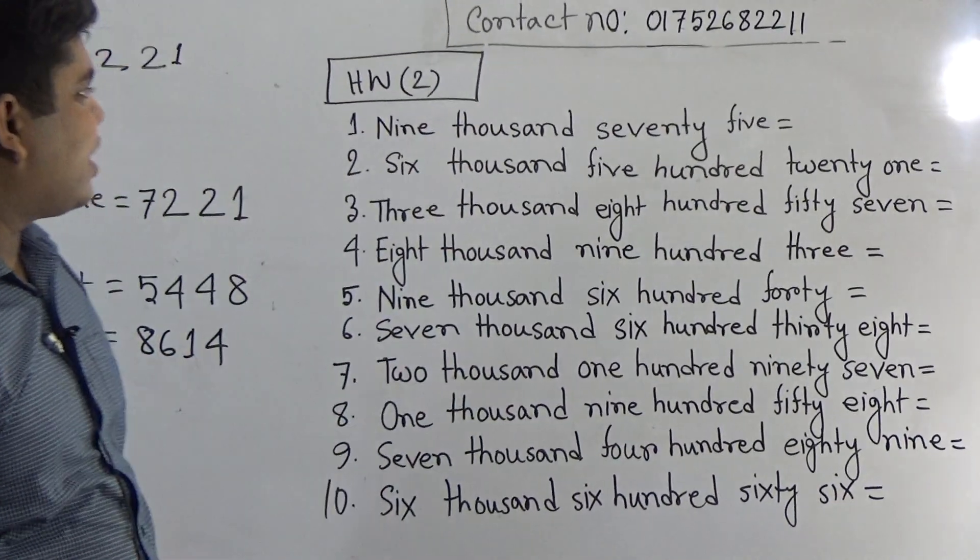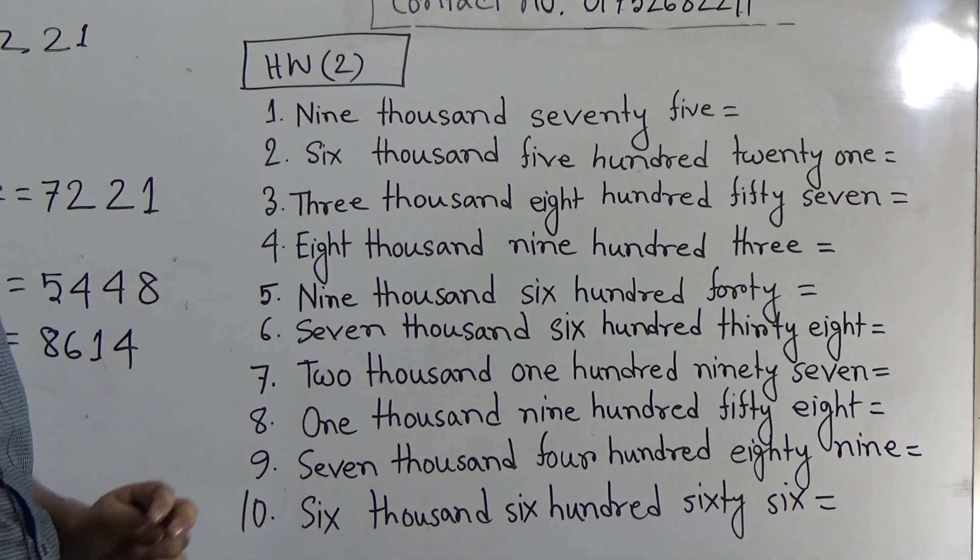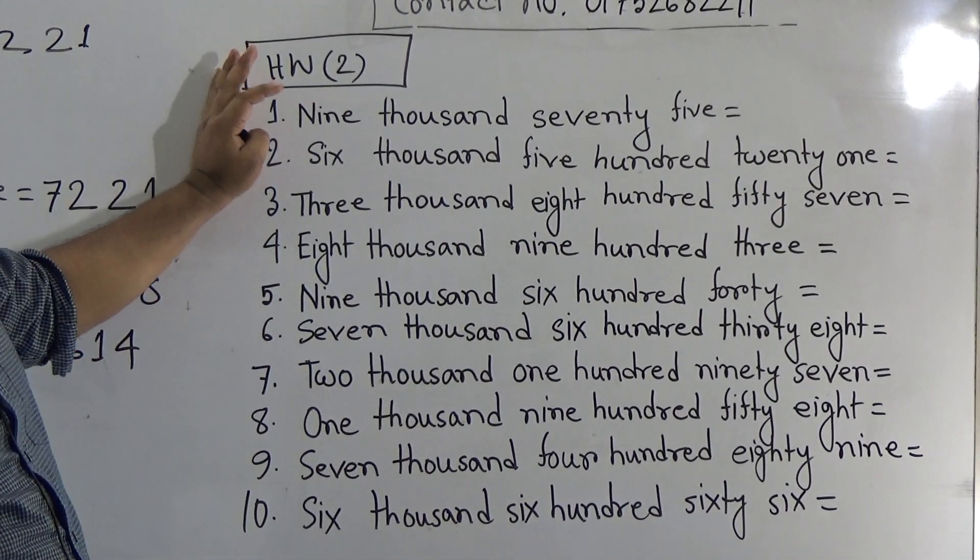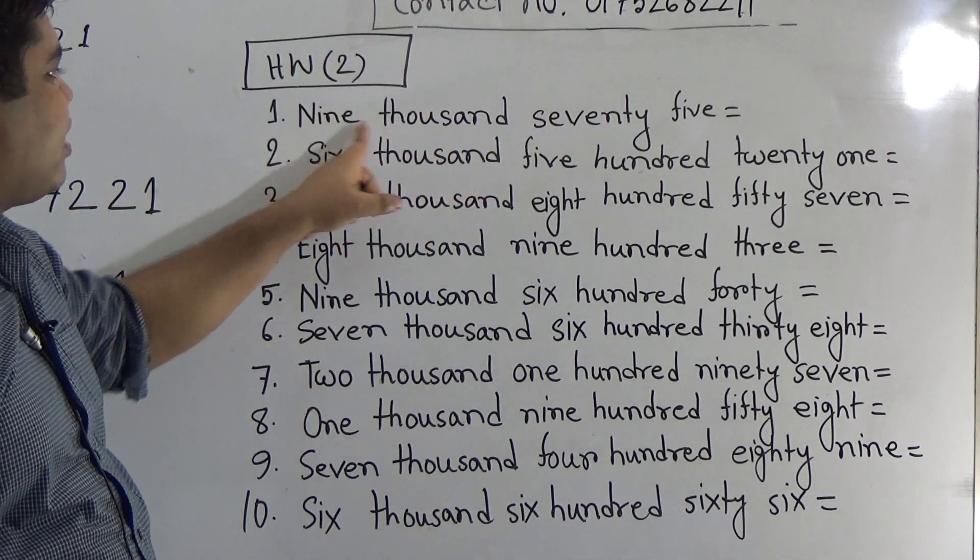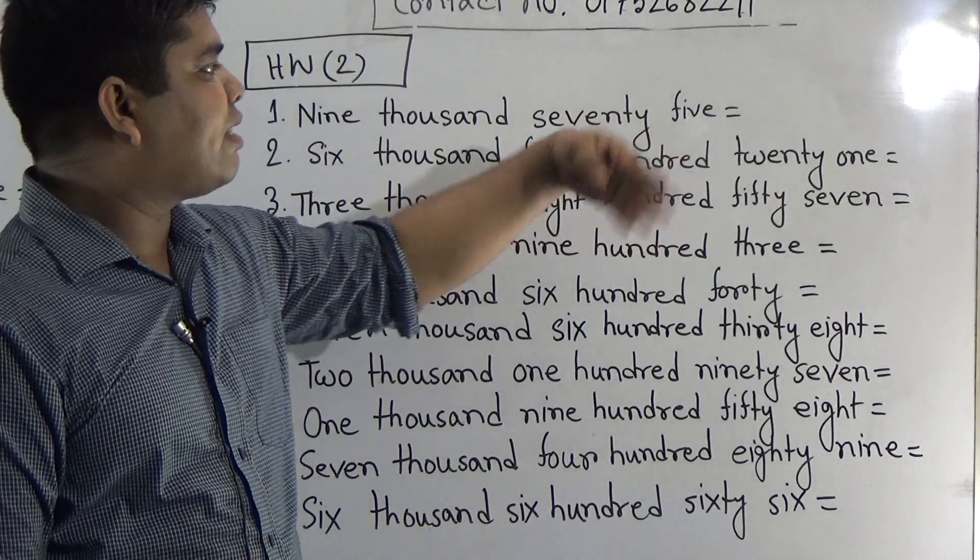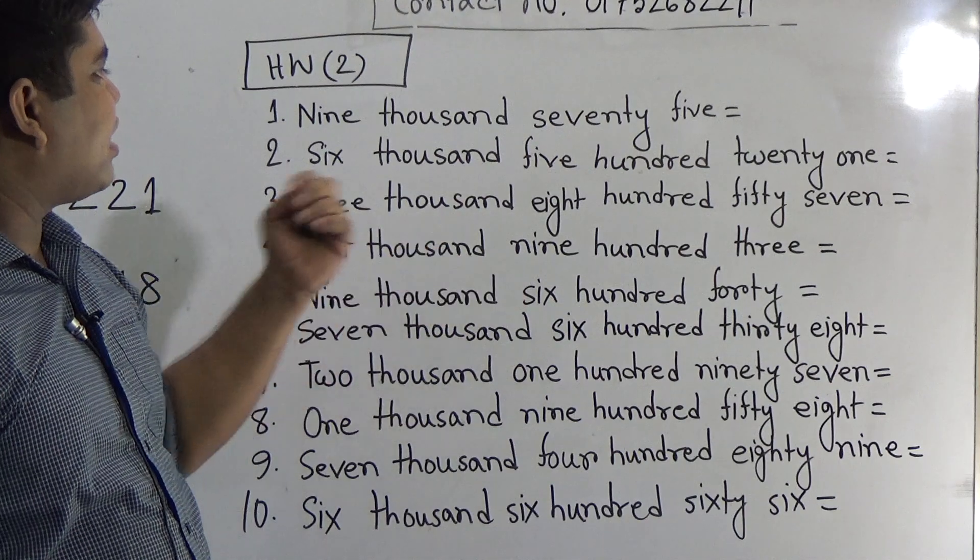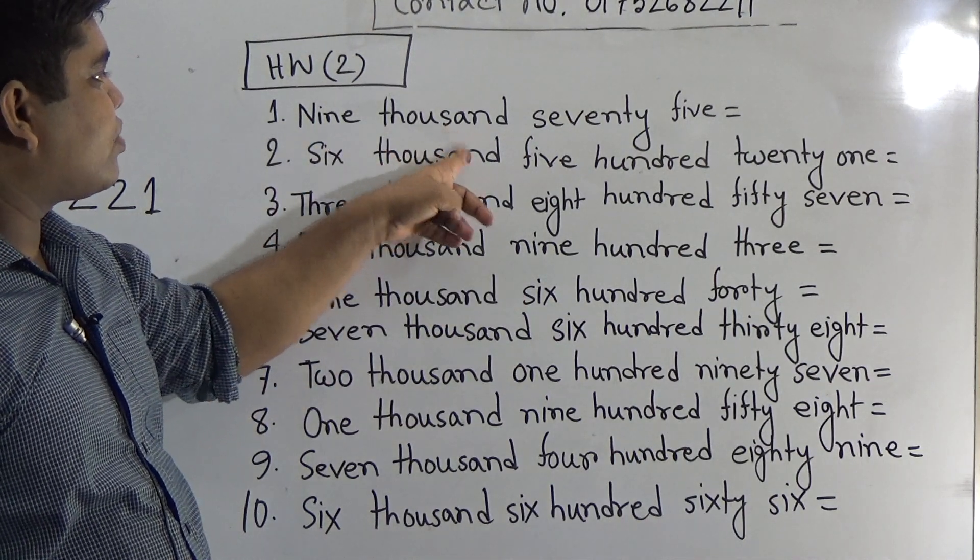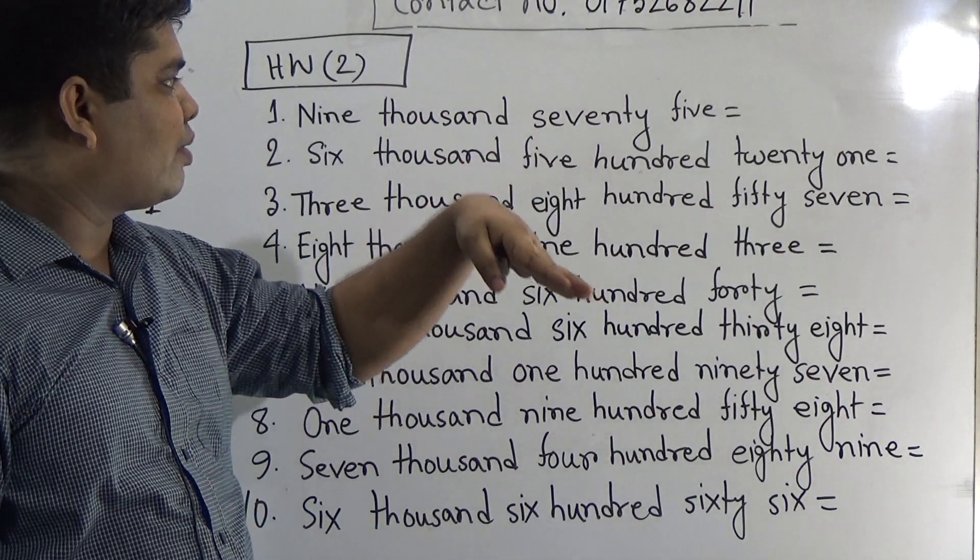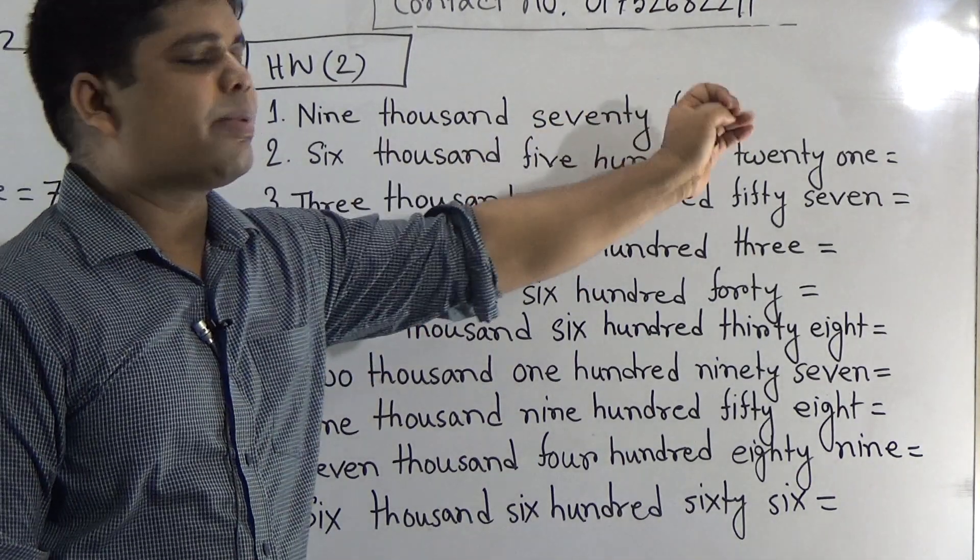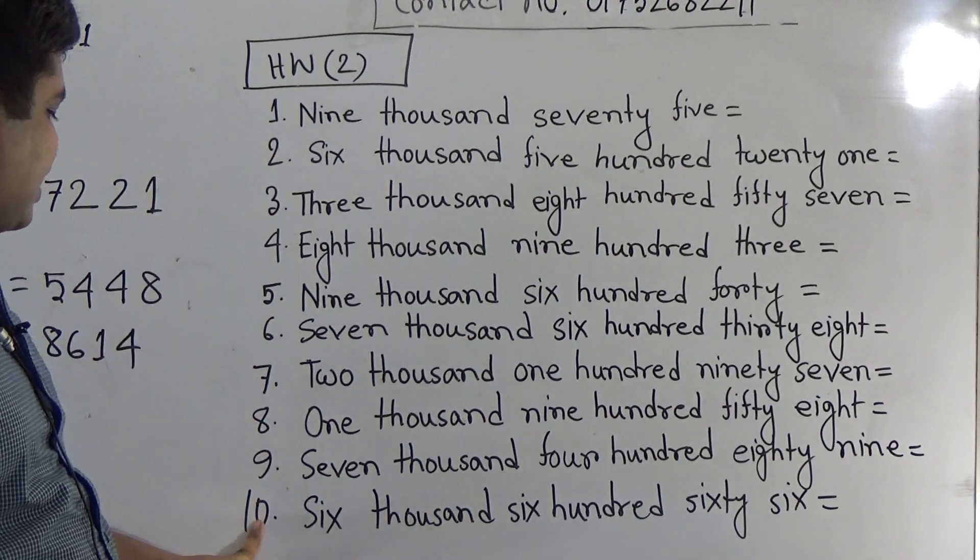My students, please pick up this questions at first. Just like at first you write SW2 and date. Then, you pick up the question. That means, 9075. And then, give equal sign. After that, you write the number. That means, 9000. So, write 9 first. Then, 75. 100 absent. So, give 0. Then, 75, write 75. Like this, you solve 1 to 10.